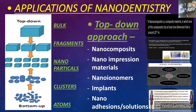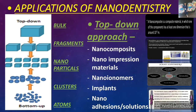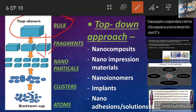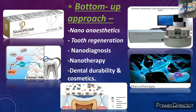Here are the applications of nanodentistry. We use two ways to apply nanodentistry in our field: the first is the top-down approach and the second is the bottom-up approach. In the top-down approach, we break down the bulk material into fragments, and then break down those fragments into nanoparticles. So from a large particle, we reduce it down to the nanoparticle range. This approach is used to form nanocomposites, nanoimpression materials, nanoionomers, implants, and nanoadditions or solutions.